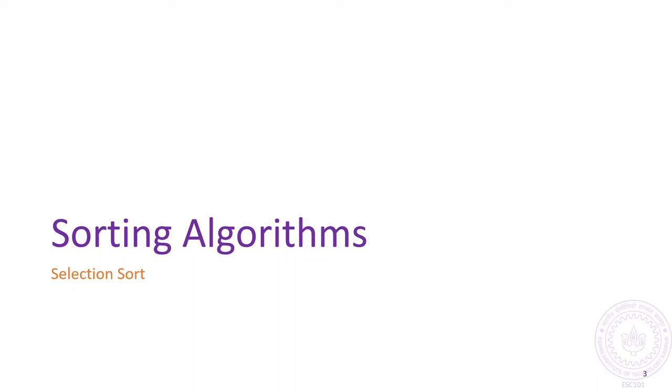The first one being Selection Sort. Selection Sort is a fairly simple algorithm which uses a lot of the concepts we have learnt in our previous discussion, such as active ranges and invariants.